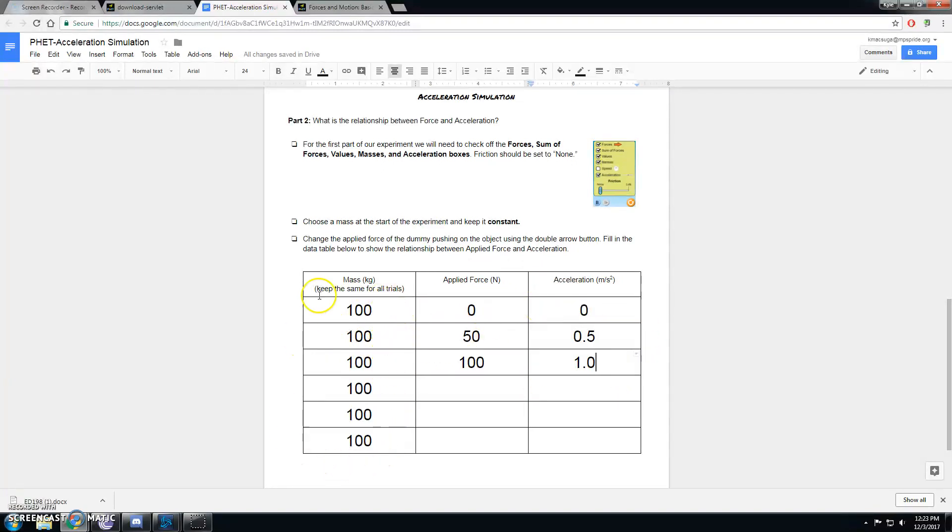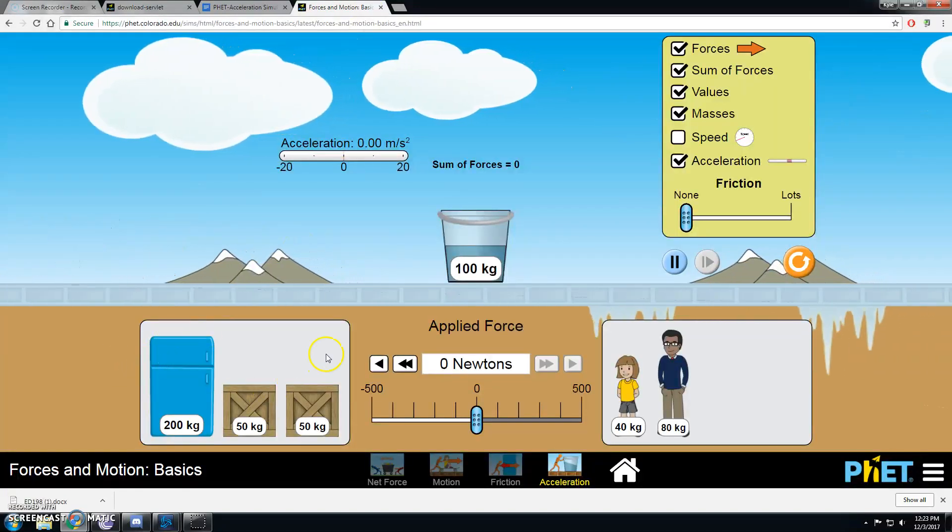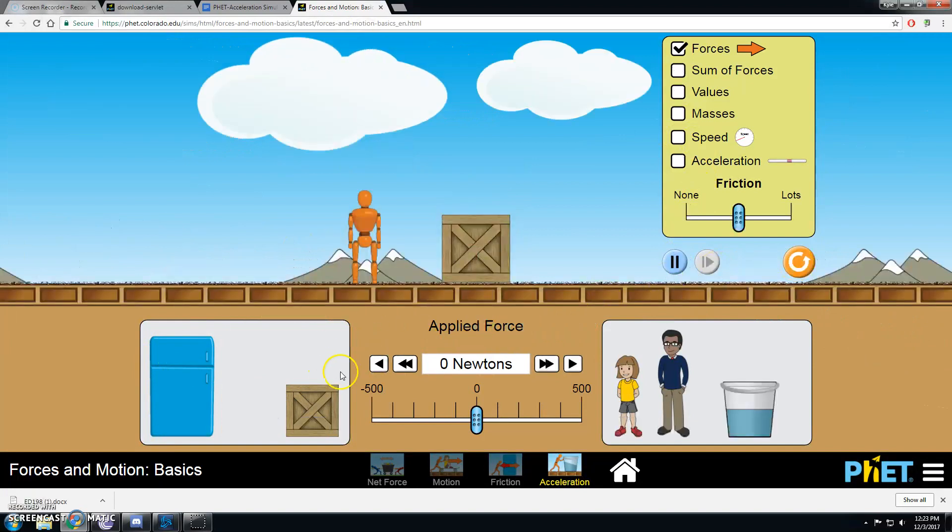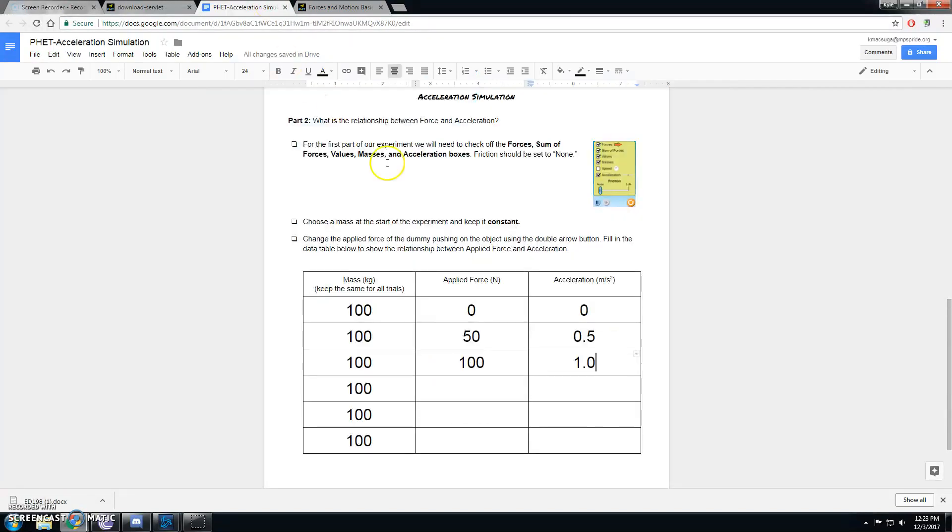Of course, you don't need to use the same mass that I chose. You can use a more massive object, such as the refrigerator. You could always stack different objects on top of each other to give you a greater mass. So that's kind of up to you.